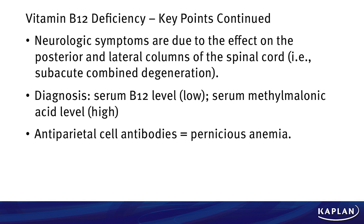Some other key points: the neurologic symptoms definitely give away the B12 deficiency. When deciding between folate deficiency and B12 deficiency, you're only going to have those neurologic symptoms — that subacute combined degeneration — with vitamin B12 deficiency. To diagnose it, take a B12 level — it's going to be low. If results are inconclusive, get a methylmalonic acid level, which will come back high. Know that for test day. And if you get antiparietal cell antibodies that come back positive, that tells you he has pernicious anemia.